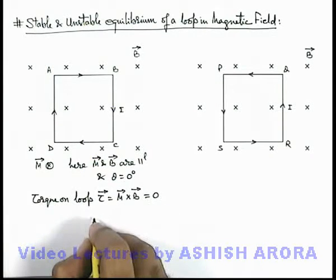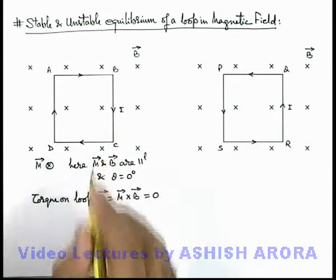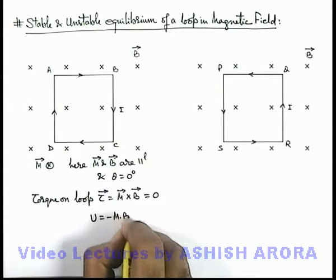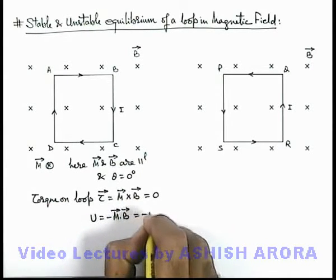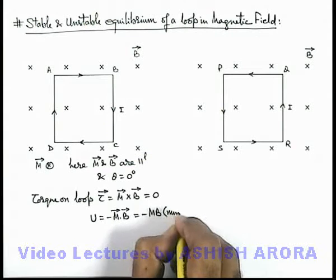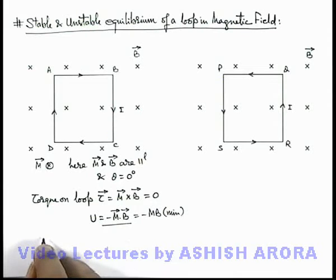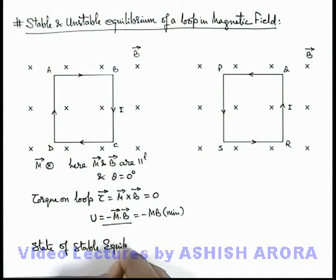In this situation we can also calculate the interaction energy of this loop with the magnetic field. This can be written as minus m dot B, and substituting the value of angle, this will be minus mB — which is the minimum possible energy in this situation. So for minimum energy we can state that this is the state of stable equilibrium, because the interaction energy is minimum.